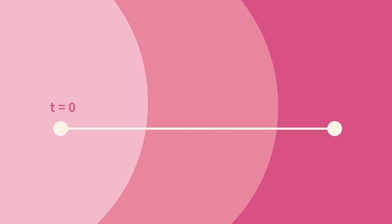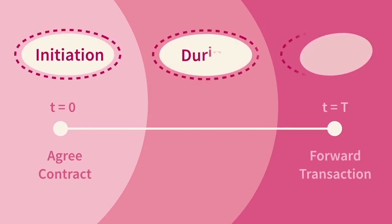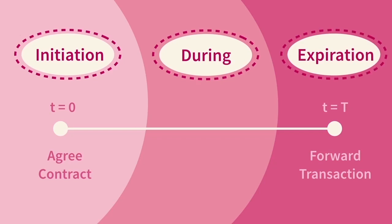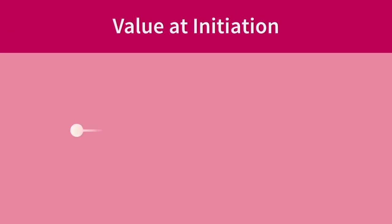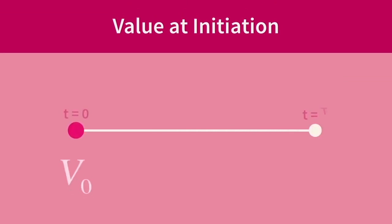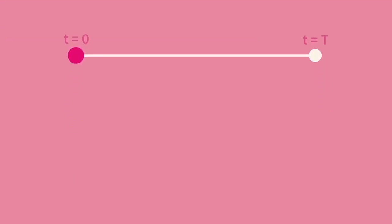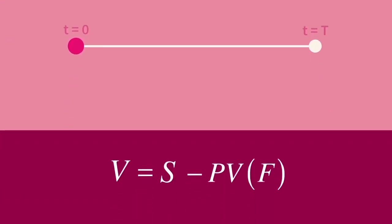So we have covered the price of the forward. Now we're going to look at the value of the forward at the three stages of its life: initiation, during, and expiration. The value of a forward is equal to the current spot price minus the present value of the forward price. First, let's look at the value of the forward at initiation. We start with the generic formula for value: spot minus present value of forward. For the value at initiation, we use the spot at time zero, denoted S sub zero.